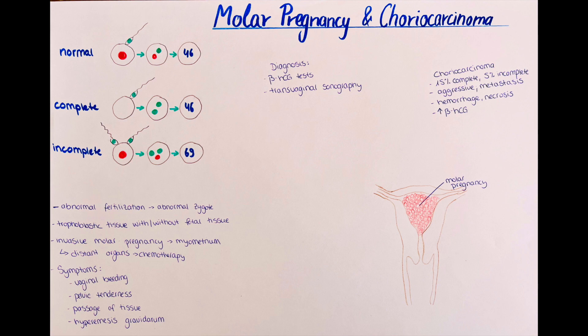Both types of molar pregnancies can develop into an invasive molar pregnancy. This occurs when the growth of the mole is not restricted to the endometrium and the uterine cavity, but grows into the myometrium, where it gains access to the blood circulation and lymphatic vessels. By this invasion, cells of the molar pregnancy are shed into the circulation, transported to distant organs, and continue their growth there.